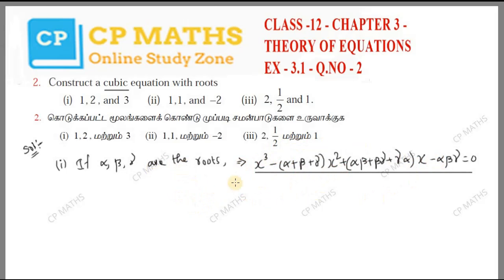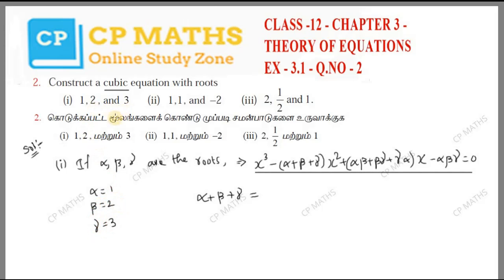So for the first sum, we have alpha plus beta plus gamma. Let's find alpha plus beta plus gamma which equals 1 plus 2 plus 3, that is 6.